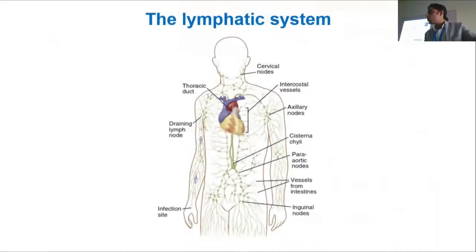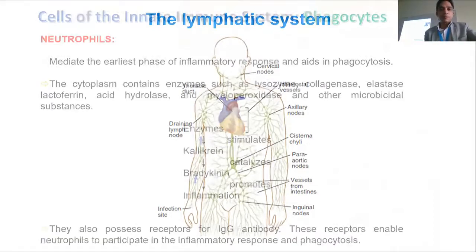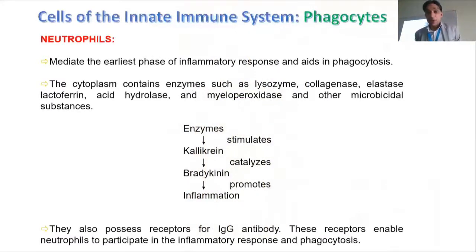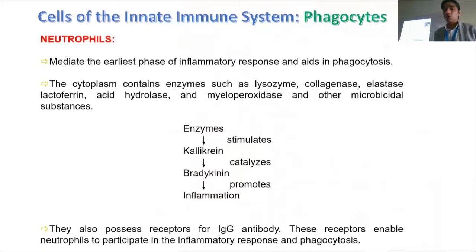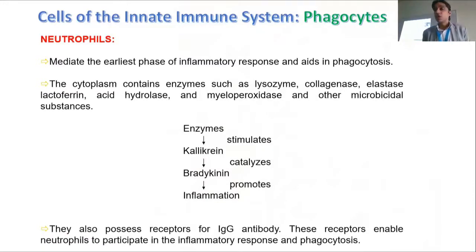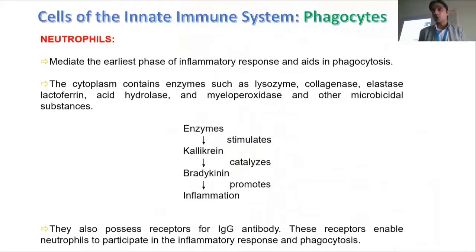We have also already studied the lymphatic system. The members of the innate immune system are present in both the blood circulatory system and the lymphatic system. The first members we'll study are the phagocytes — cells which have the potential to eat other cells.